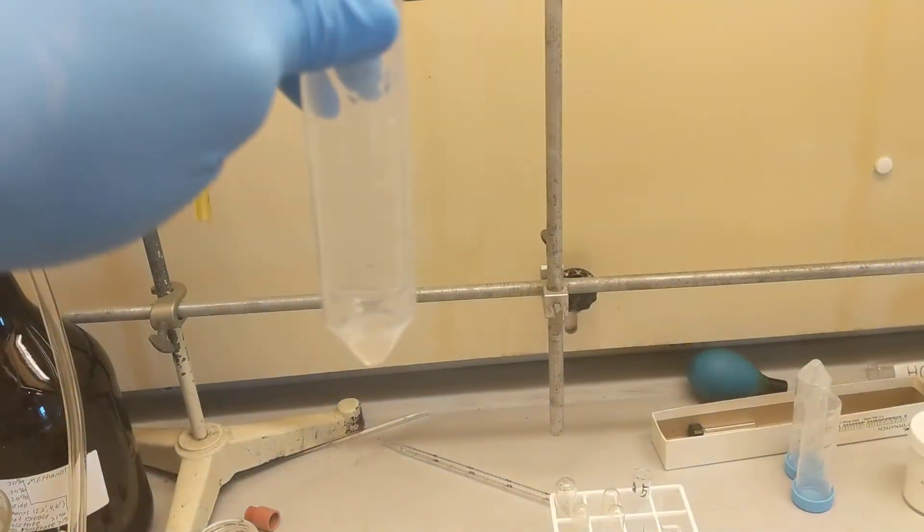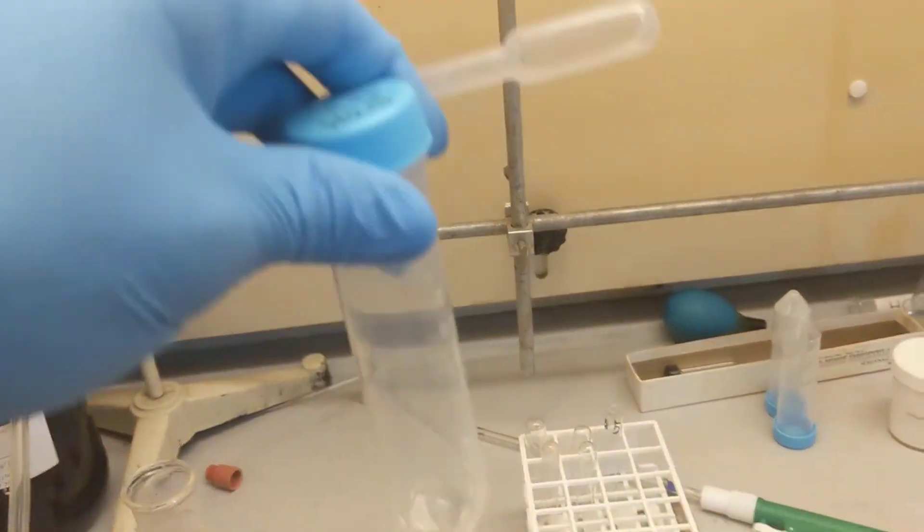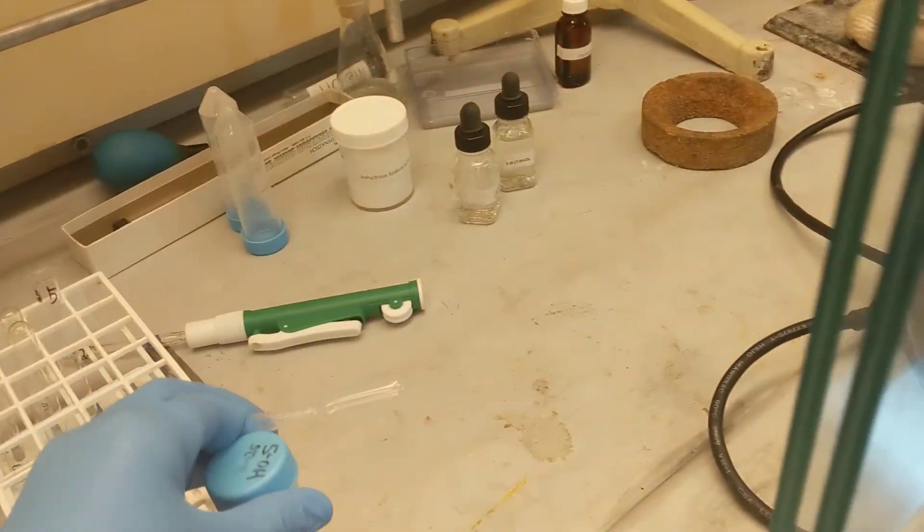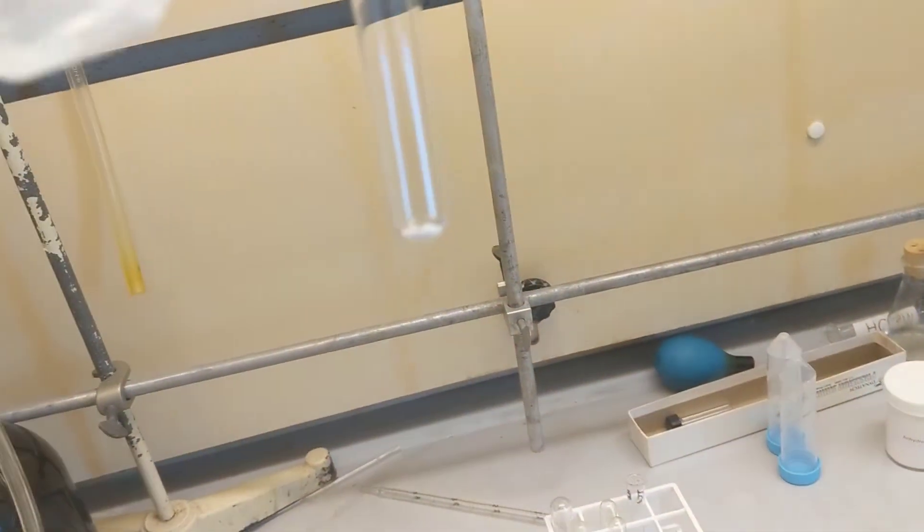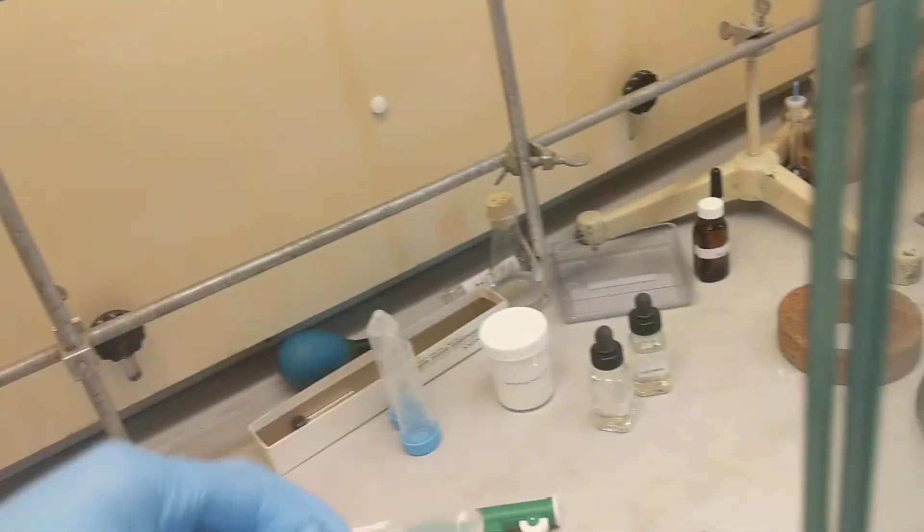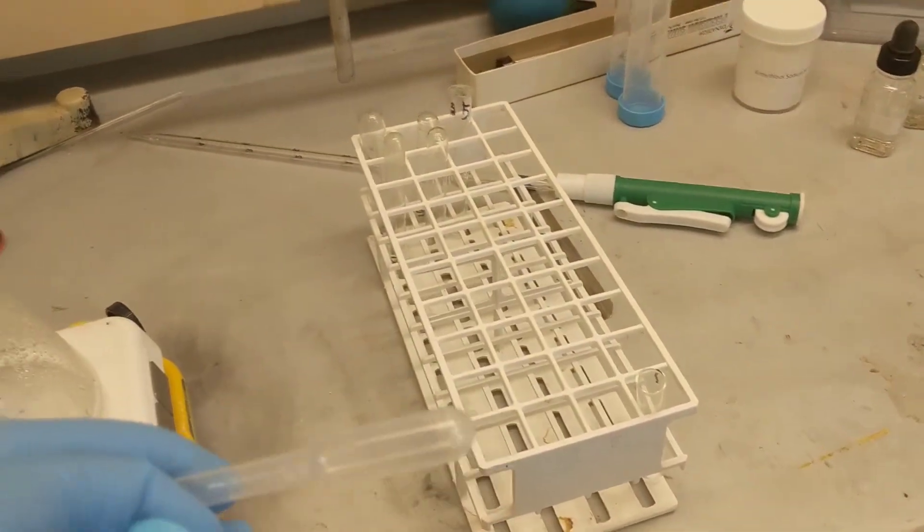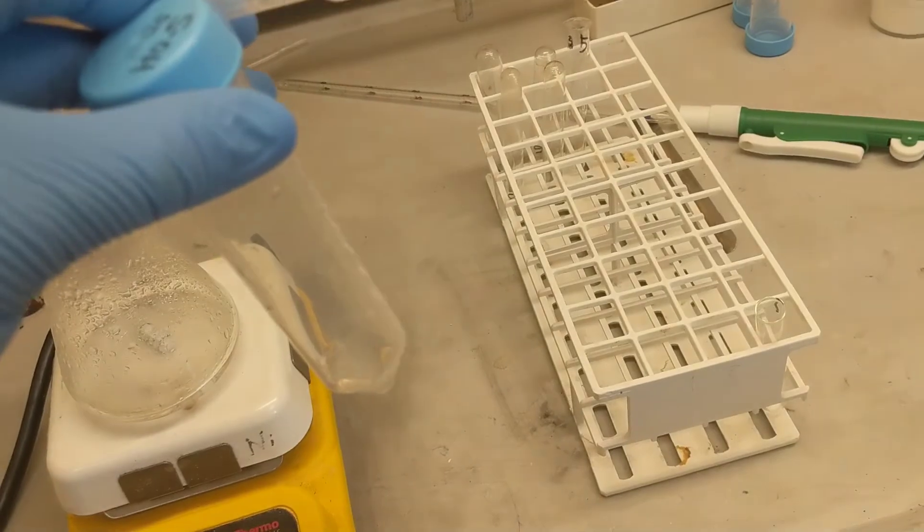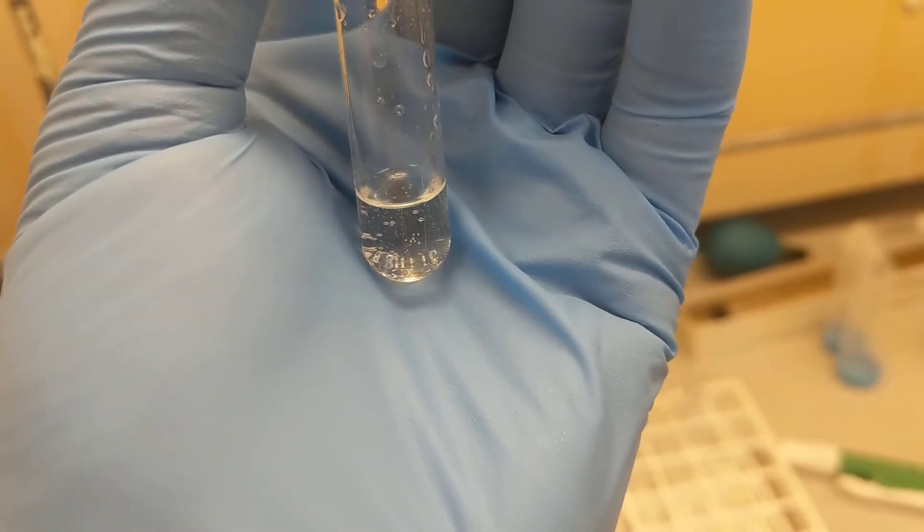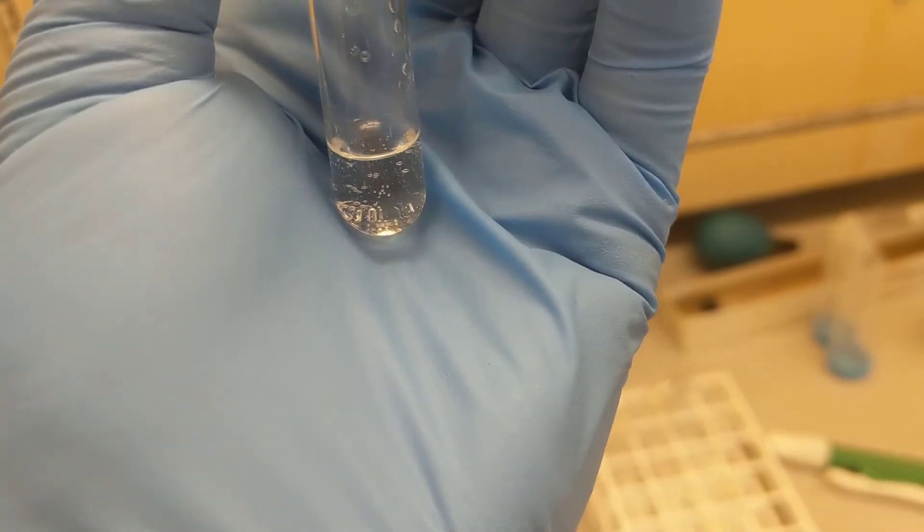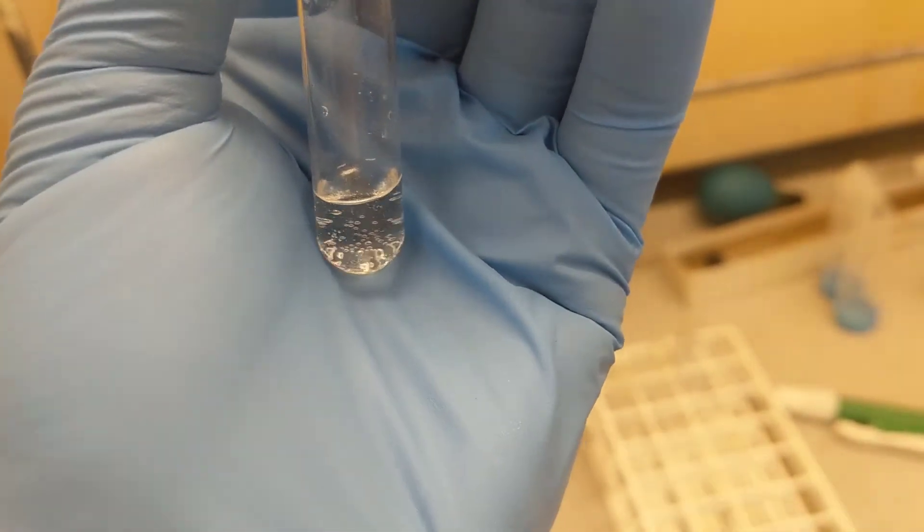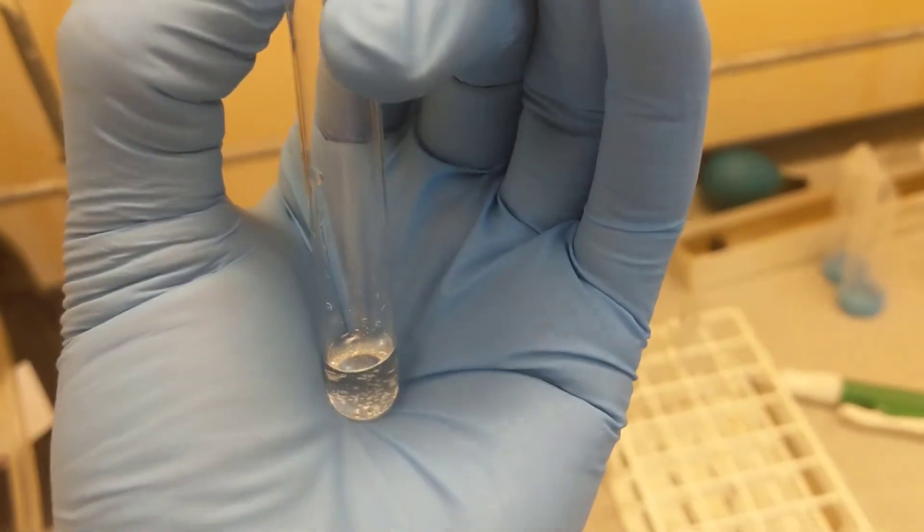I got my aqueous layer for Experiment 20B. I'm just going to add it into this test tube with sodium bicarbonate, wait for the bubbles to stop, transfer it into my vials, and be done with 20B. You can see all those bubbles coming up, so I'm just going to wait for those to stop and then transfer it into my vial. Then I'll be done with 20B.